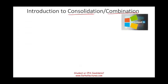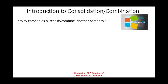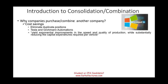The first question is: why do companies purchase or combine with another company? One major reason is cost savings — when we combine both companies, we can eliminate duplicate positions. A good example is Tesla and Grumman Automation, where Tesla stated that the combination would reduce capital expenditure required per vehicle, thereby saving money. So cost saving is one key reason.